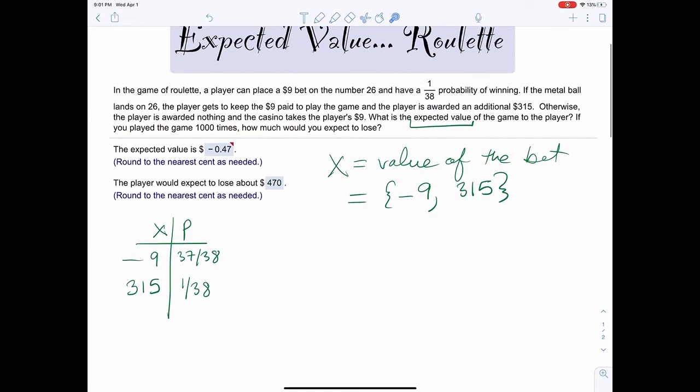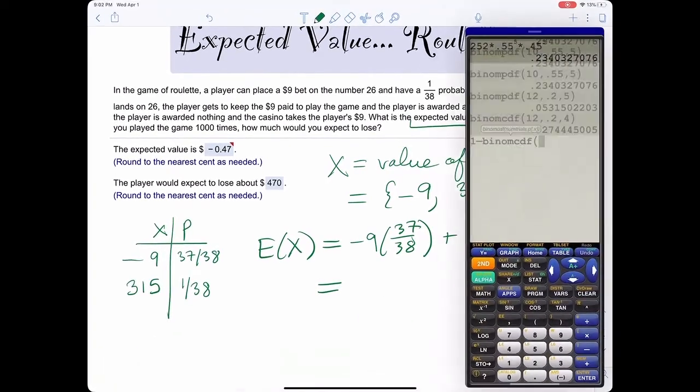So that's it. From there, you can find the expected value by just multiplying. You can use the formula or just do one of our stats. So you can do negative 9 times 37 over 38 plus 315 times 1 over 38 and get the answer that way.